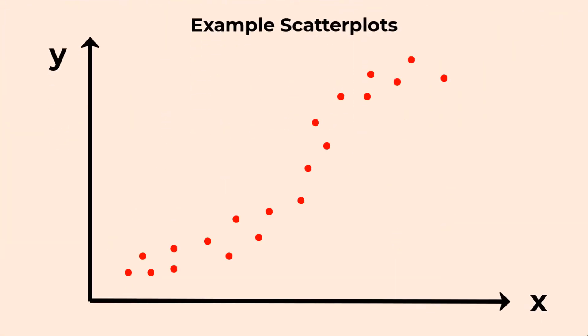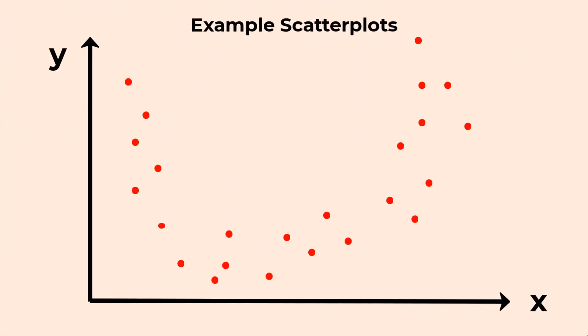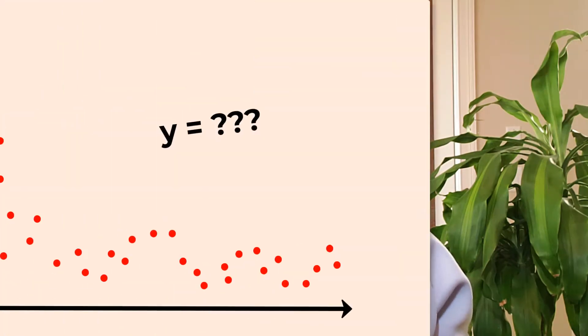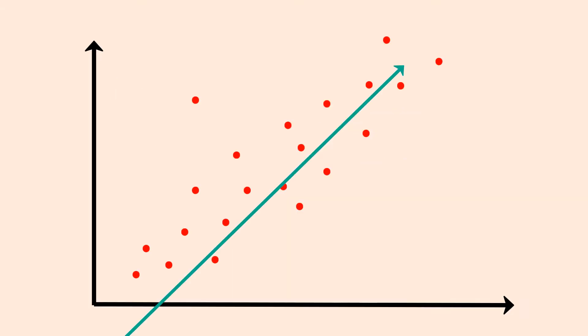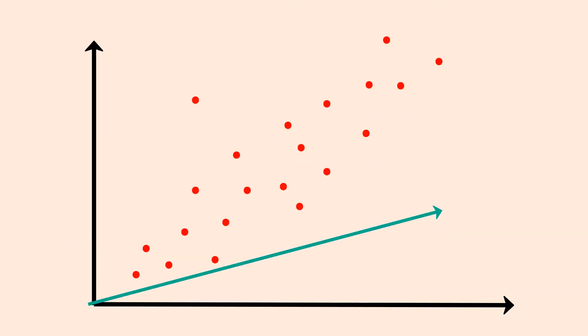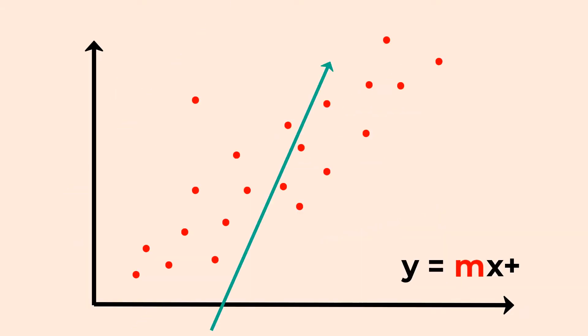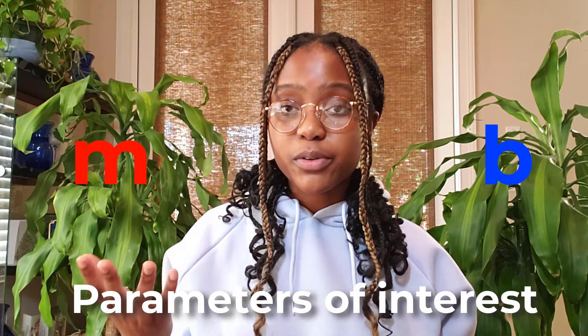So how is this useful for parameter estimation? First, we need to plot our data. After plotting our data, we can look at the shape of the curve to see what equation might best model our scenario. Finding the right general equation is super important for making accurate predictions. The main problem is that we don't know what numbers go into the curve's equation — it's like trying to write the equation of a line without knowing the slope or y-intercept. Here, the slope and the y-intercept are the parameters of interest.